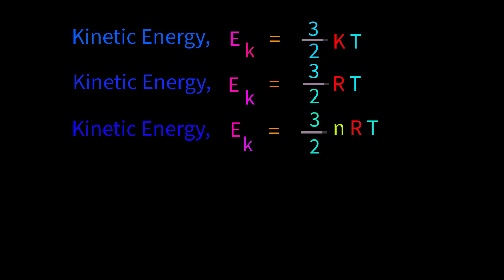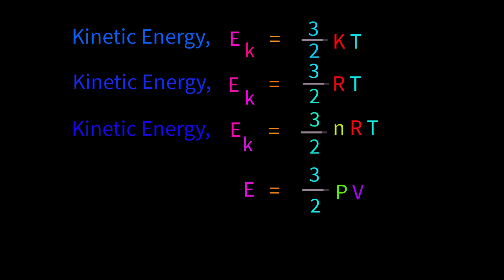When solving mathematical problems on kinetic energy for a gas, you may encounter more equations. One equation is E equals 3/2 PV, where E means total kinetic energy — we should remember that Ek equals total kinetic energy E — P means pressure, and V means volume. If the values of pressure and volume are given in the problem, then we can apply this equation.